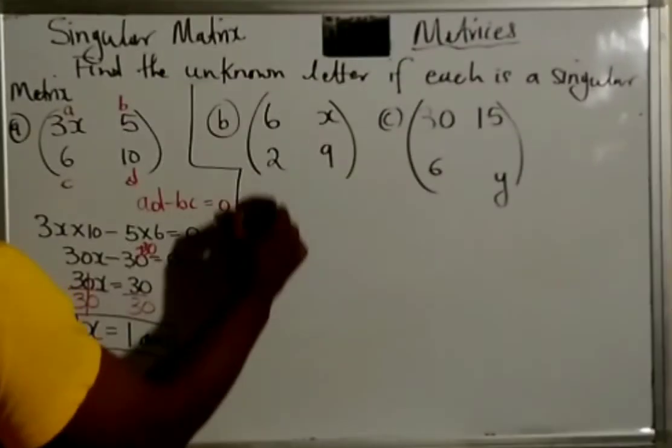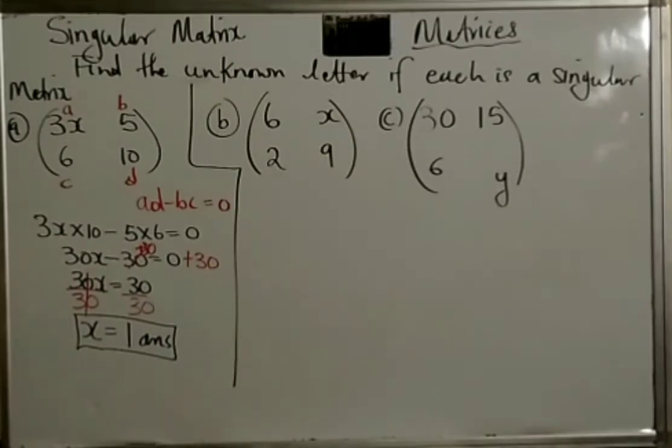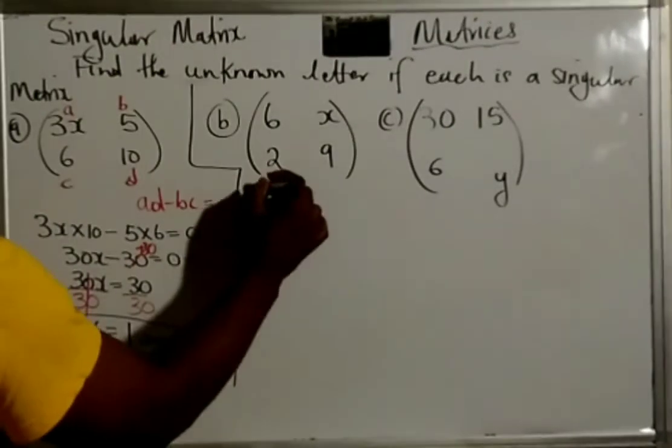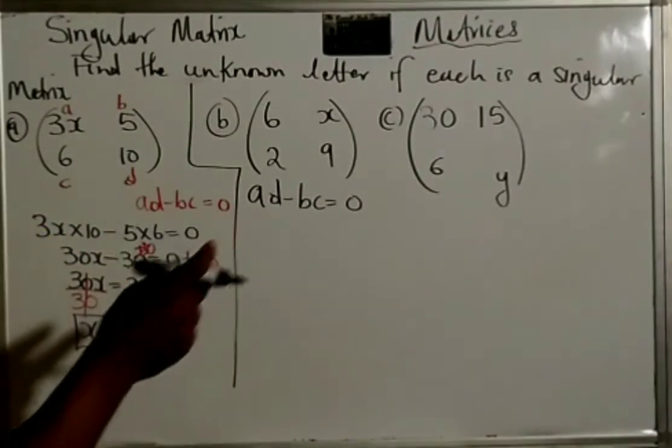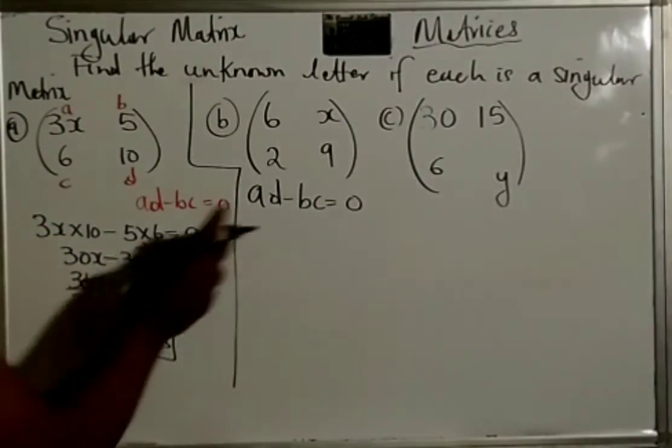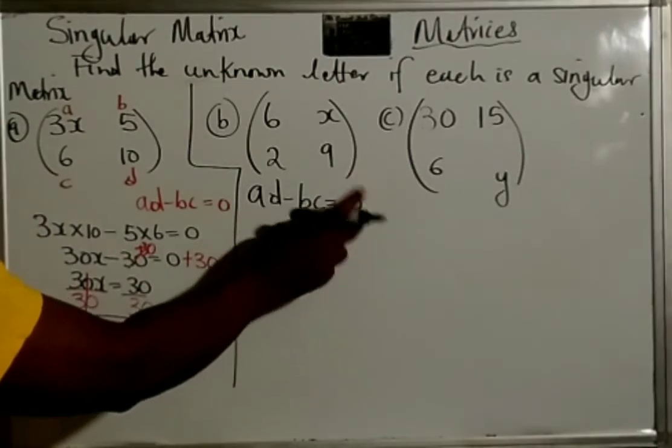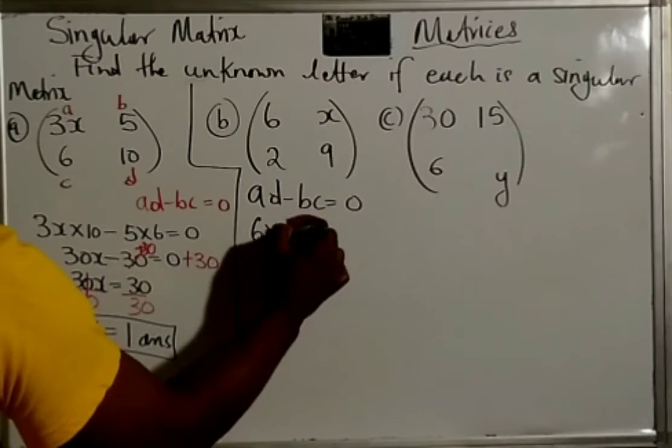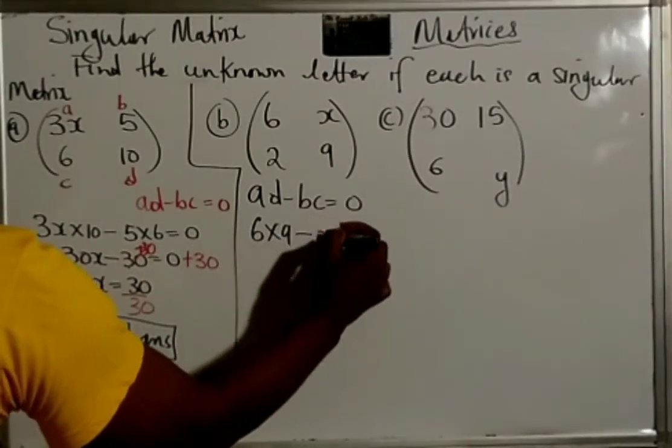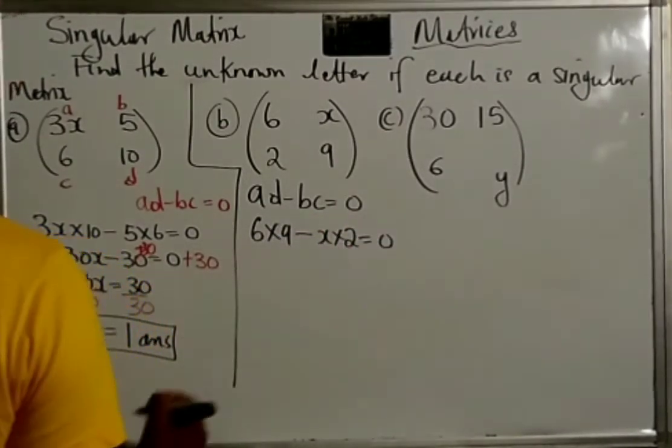Let us find this one again, X again. So, same procedure, AD minus BC is equal to zero, because it's a singular matrix. And remember, a singular matrix is when the determinant is equal to zero.